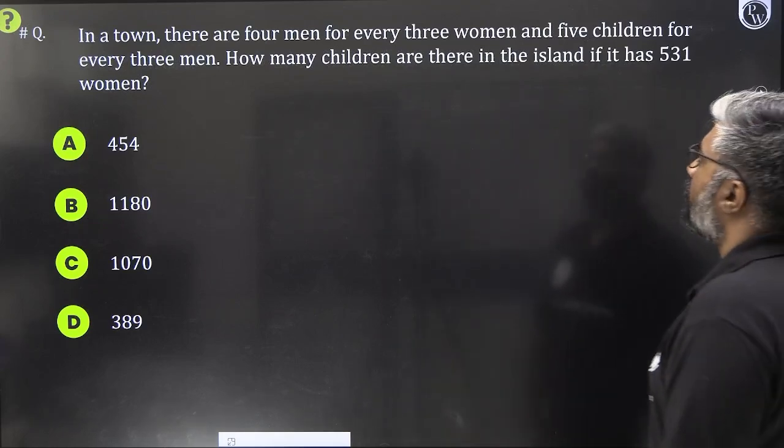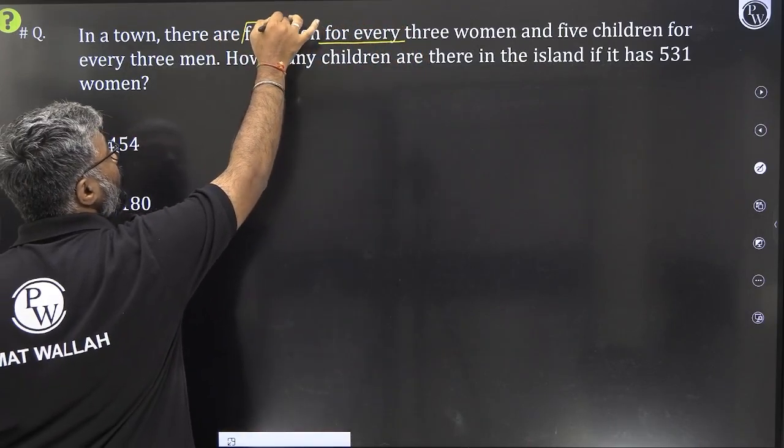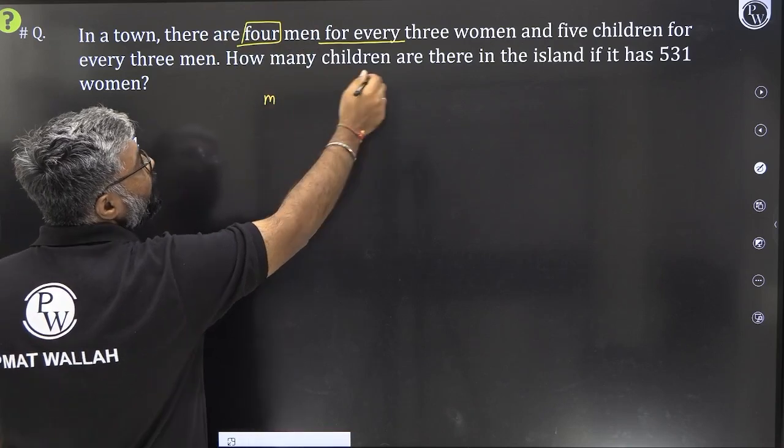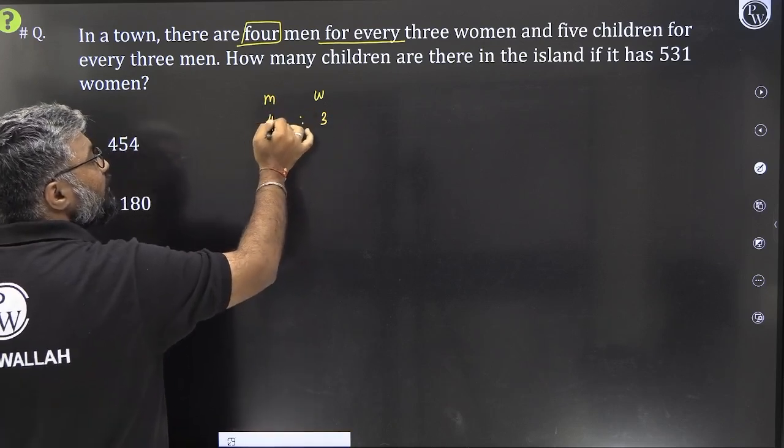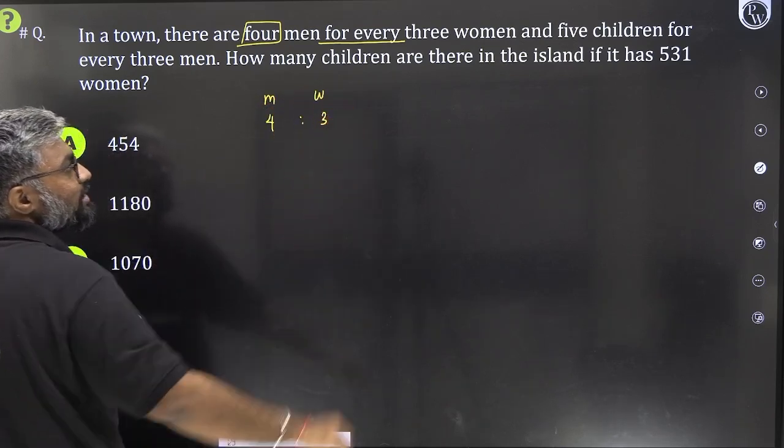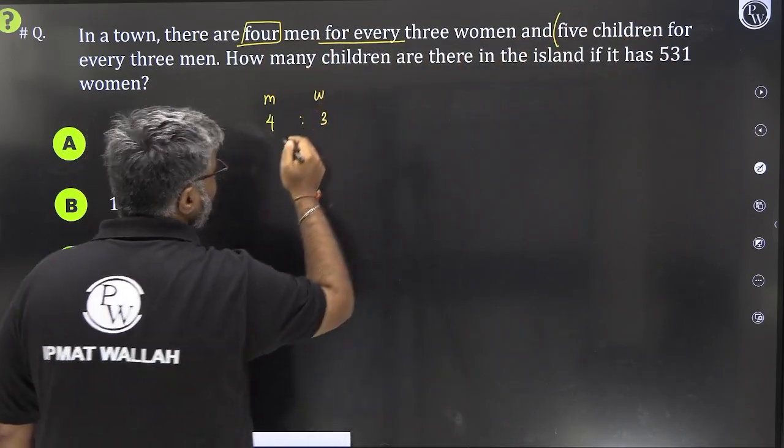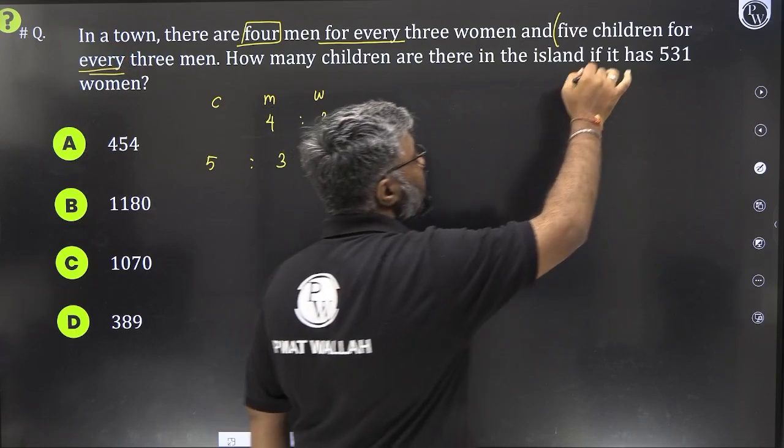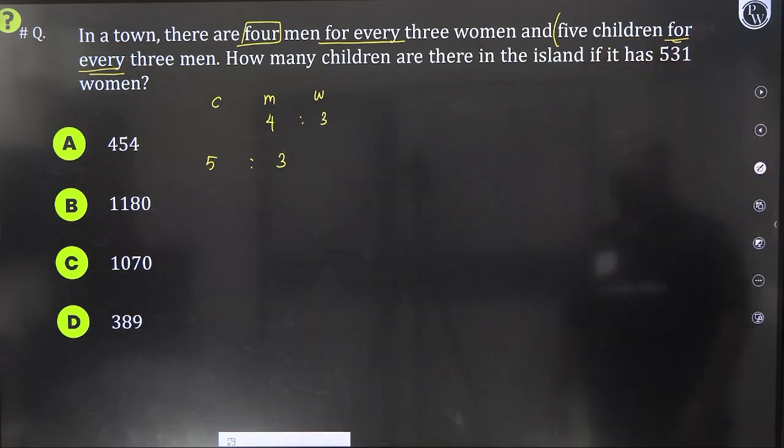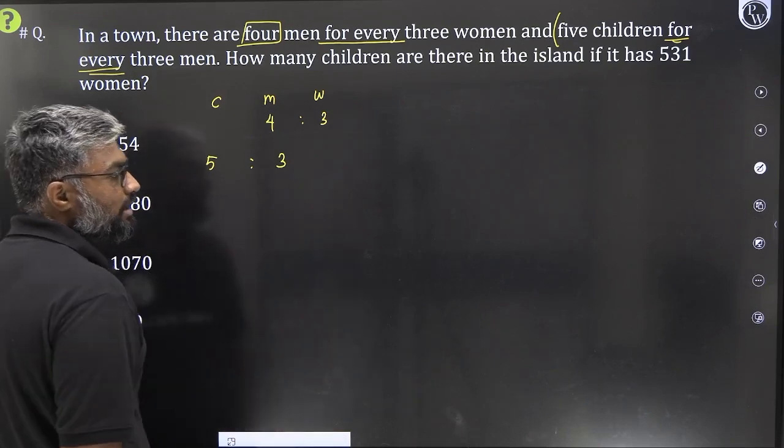Moving on. In a town, there are 4 men for every 3 women. Whenever we see this term that says for every, that does not mean there are exactly 4 men. Not exactly 4 men. They are saying that the ratio of men to women is 4 is to 3. If there are 4 men, then there are 3 women. If there are 8 men, then there are 6 women and so on. And 5 children for every 3 men. So 5 children for every 3 men. Whenever you see for every, it is ratio. They are saying how many children are there in this island if it has 531 women. 531 women. Number of women is being given to us.